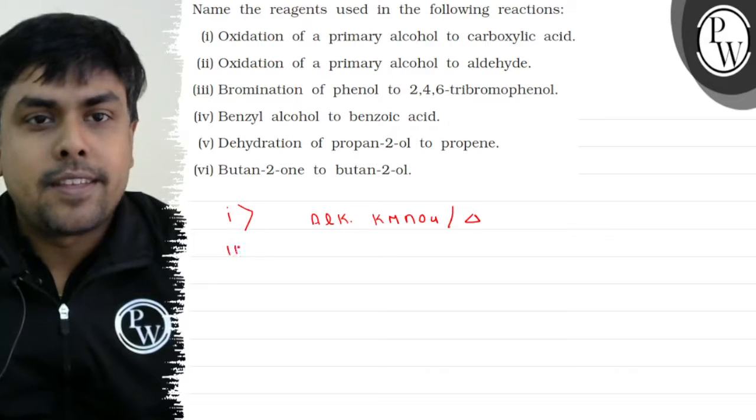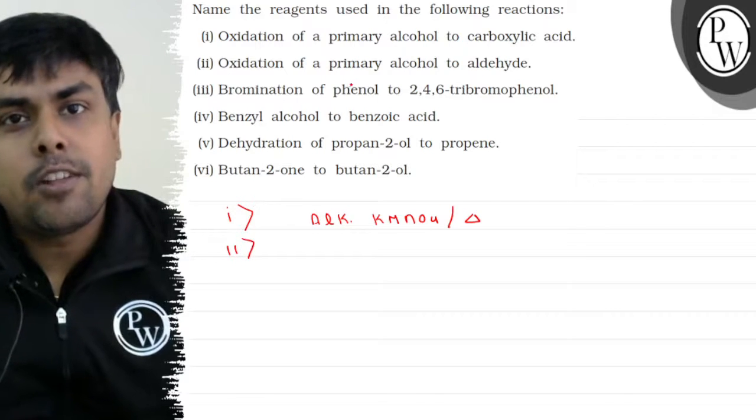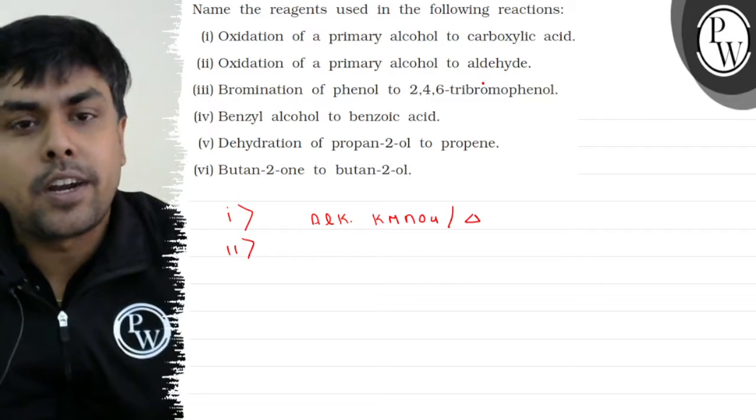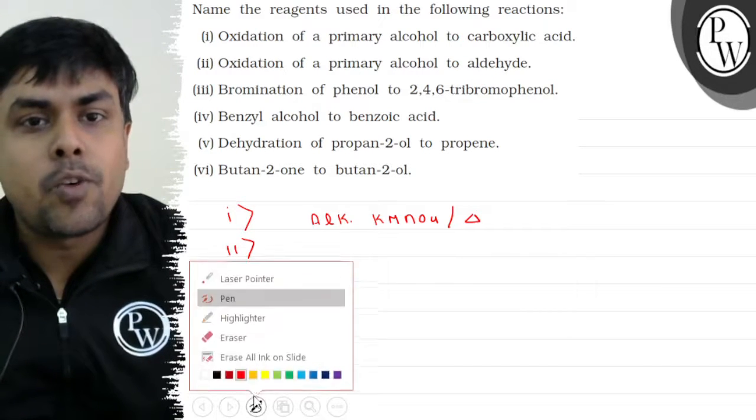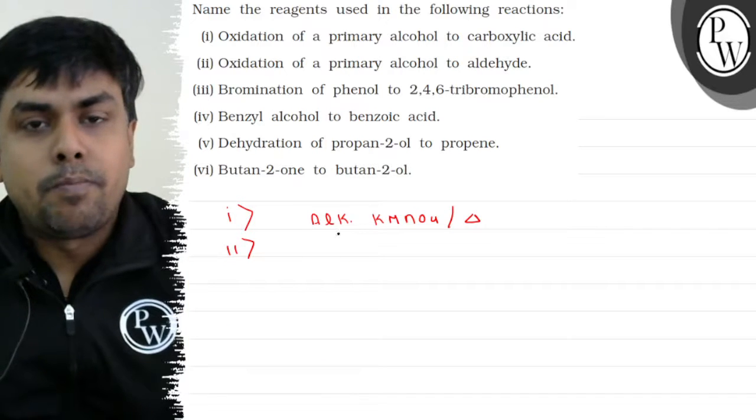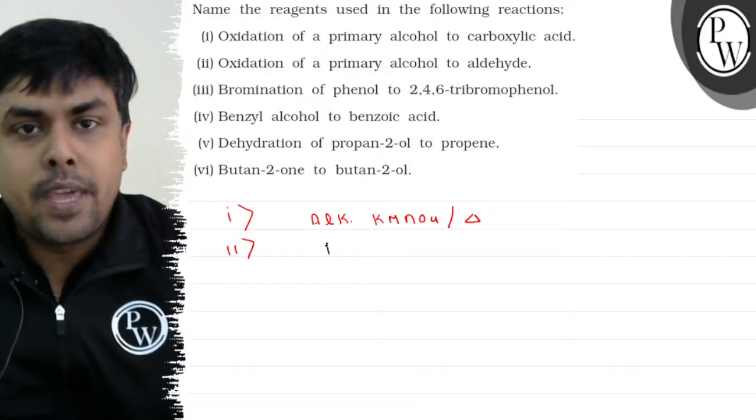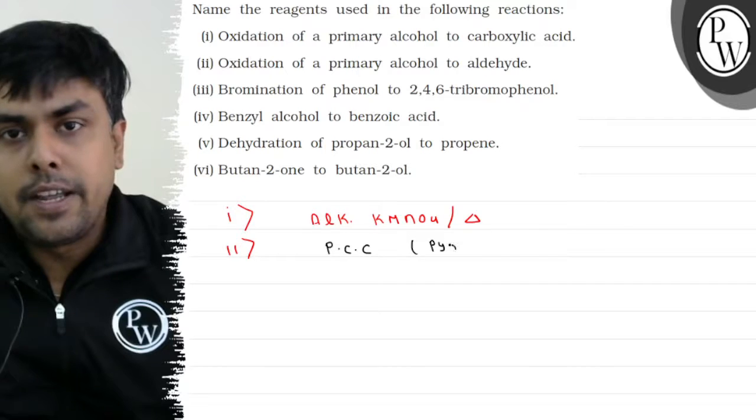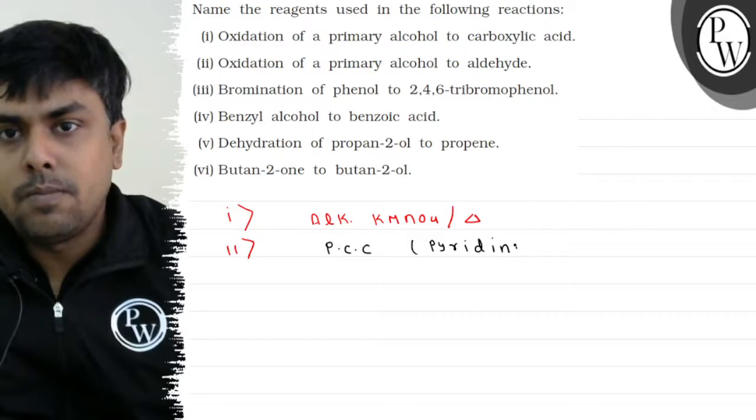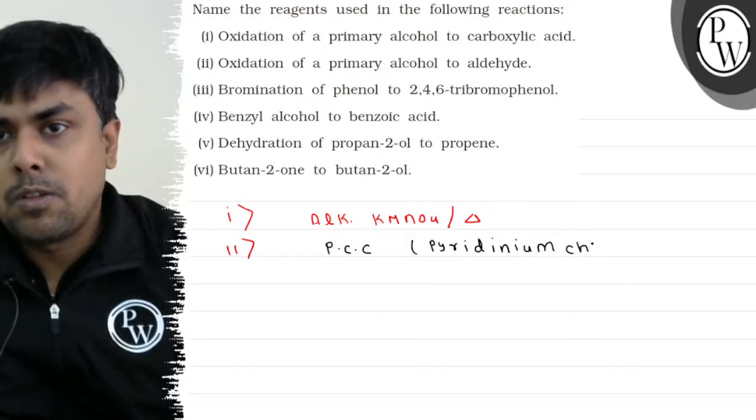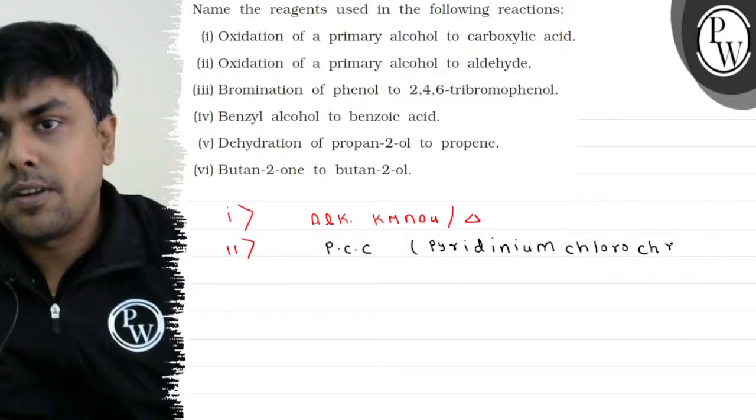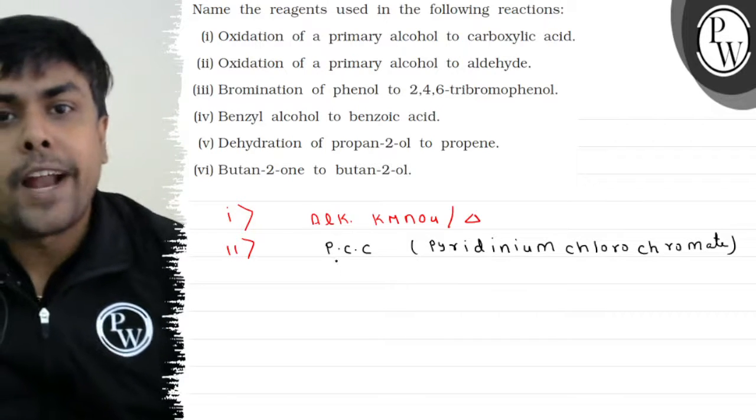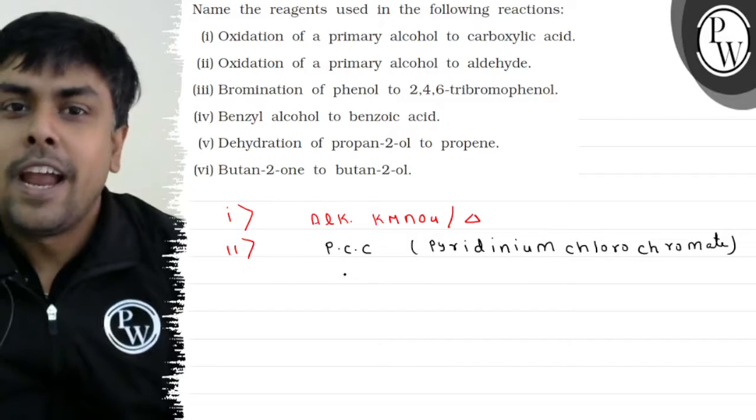Part 2: Oxidation of primary alcohol to aldehyde. Now, I will convert the primary alcohol into aldehyde. This is why I will use mild oxidizer. The best mild oxidizer is PCC, pyridinium chlorochromate. This is a mild oxidizer which converts primary alcohol to aldehyde.